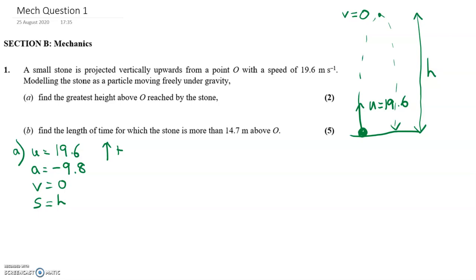So you can see that we've got V, A, U and S, which means we use V squared equals U squared plus 2AS. When you put all of your values in, you get 0 equals 19.6 squared plus 2 times minus 9.8 times H. So we've got, if I just move this over to the left-hand side to make it positive,